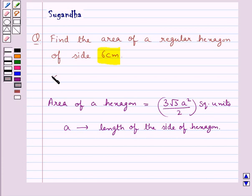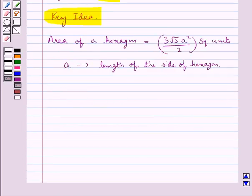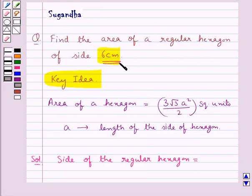This is the key idea to be used for this question. Let's move on to the solution. We are given the side of the regular hexagon is equal to 6 cm.